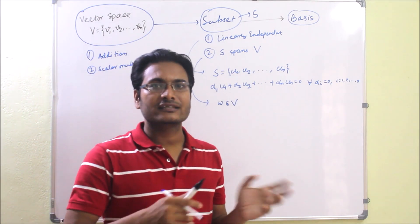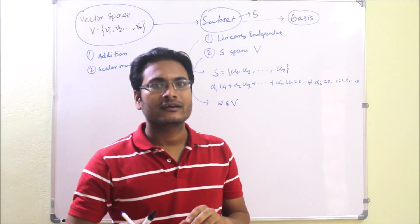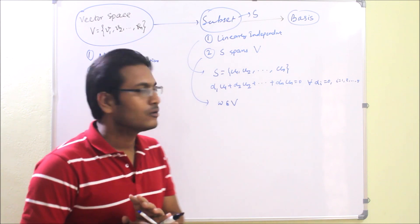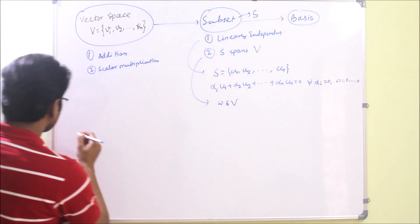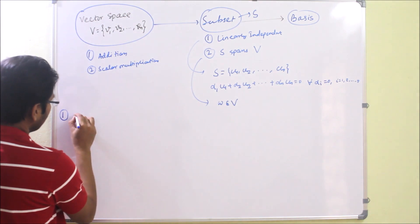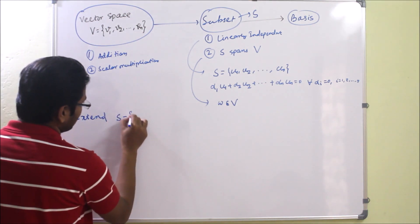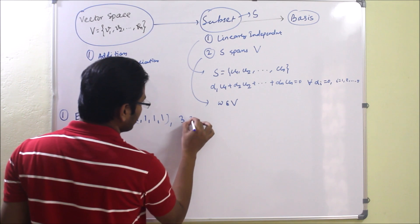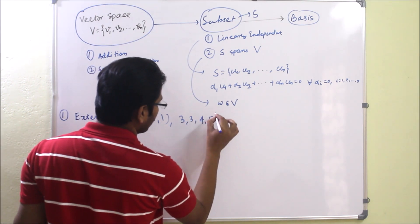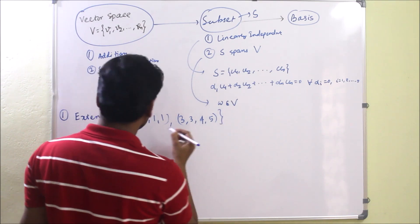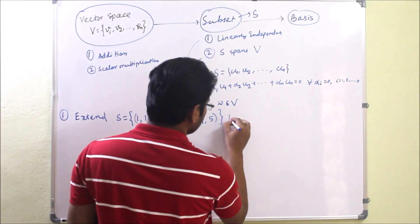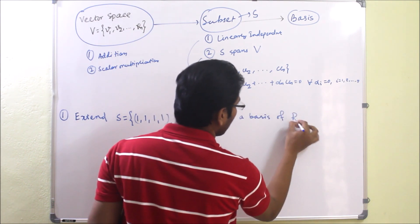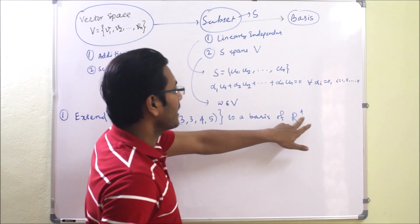Here we will see that any subset of V can be extended to a basis of that vector space. We will consider the problem: extend S = {(1,1,1,1), (1,3,4,5)} to a basis of R4.